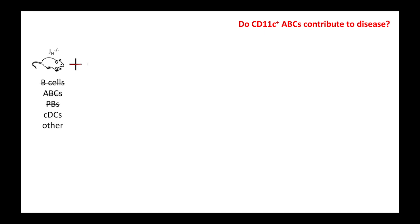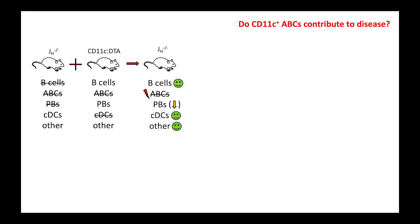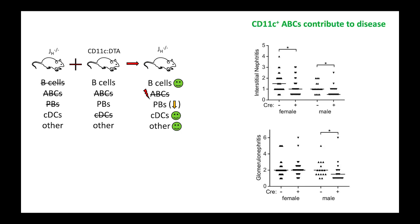Finally, in a mixed bone marrow chimera system in which CD11C positive B-cells could be constitutively deleted without affecting CD11C positive dendritic cells, we showed that CD11C positive ABCs contribute to renal pathology in lupus, although autoantibody titers did not appear to be affected.